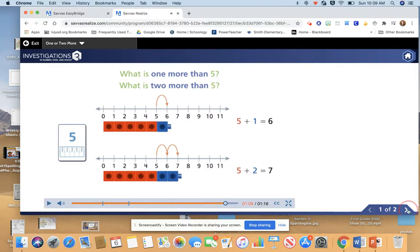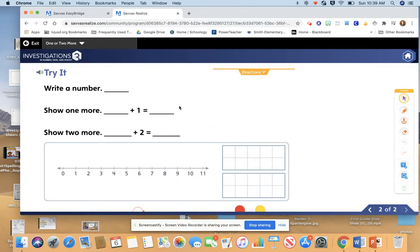Okay, let's try it together. I'm going to write a number. Let's write the number six. Now I'm going to add one more to six. I can find it on my number line. Six. And to add one more, I'm going to move one spot. So one more than six is seven. Or six plus one equals seven.